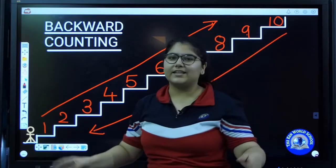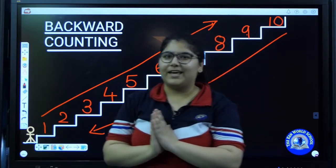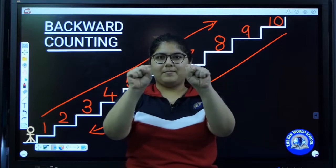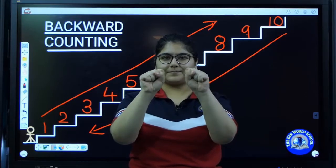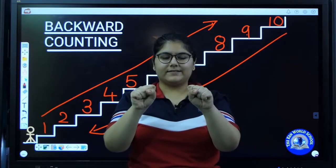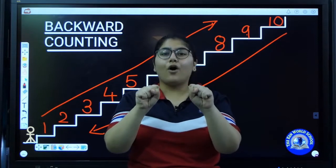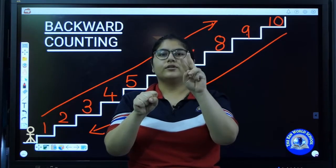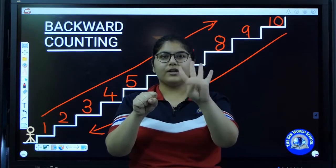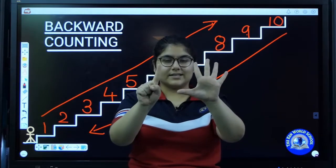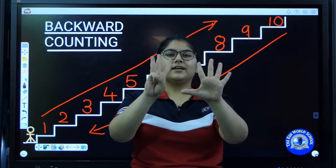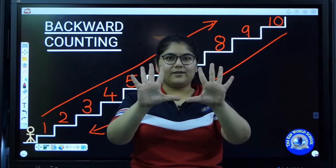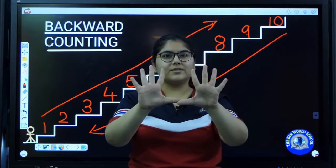Now the boy is very tired, leave him alone. Now we will count using our hands. Make two fists. Let us count with forward counting: one, two, three, four, five, six, seven, eight, nine, ten. Now how do we count with backward counting?